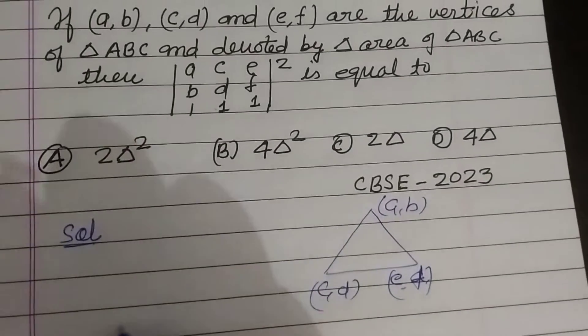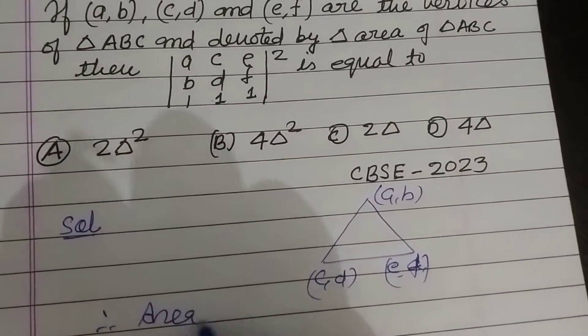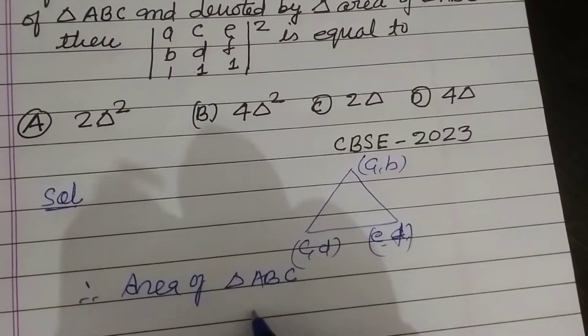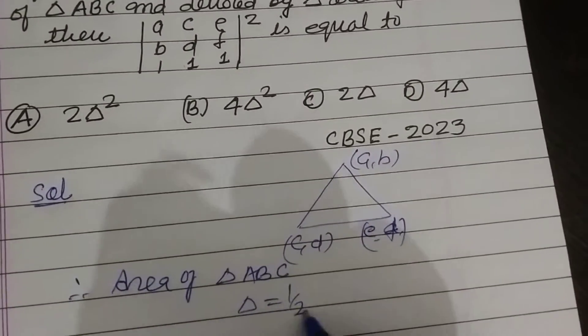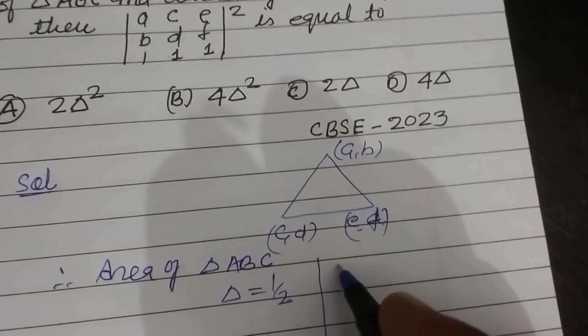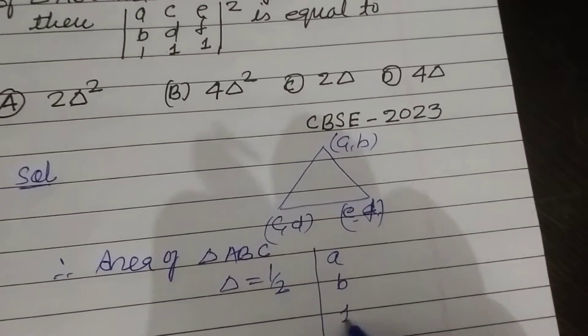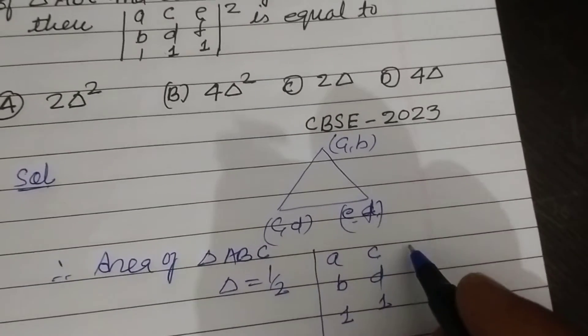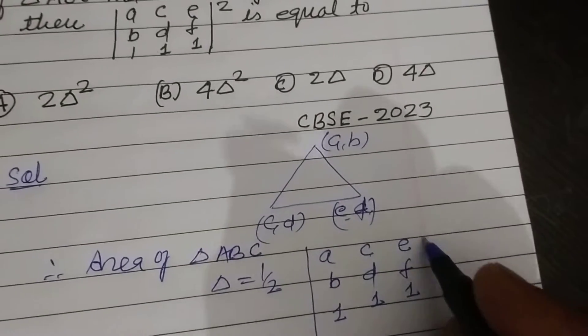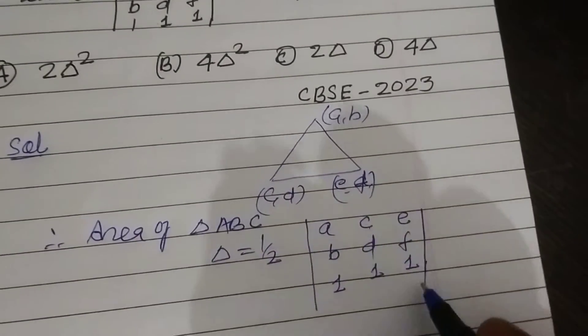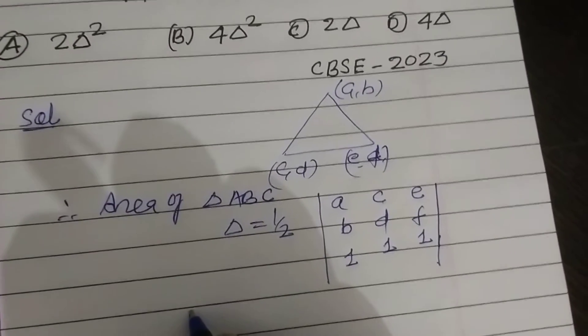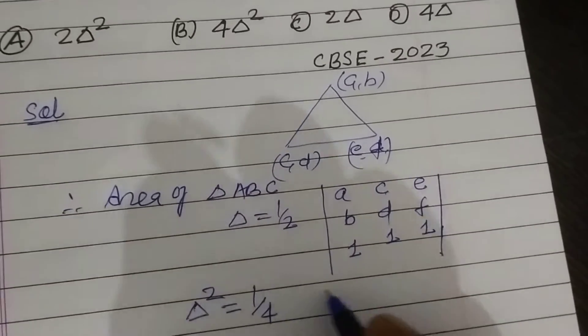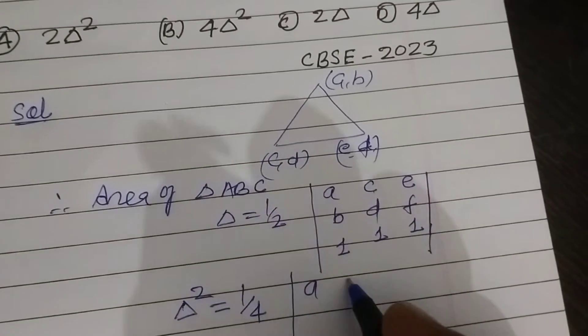Therefore, area of triangle ABC: delta equals half of the determinant |a b 1; c d 1; e f 1|. Now squaring both sides, so delta squared equals 1/4 times |a c e; b d f; 1 1 1| whole square.